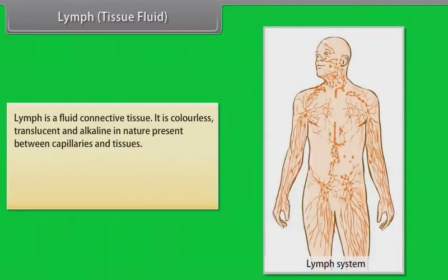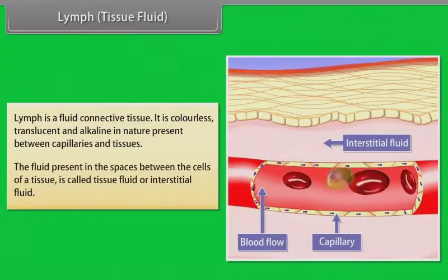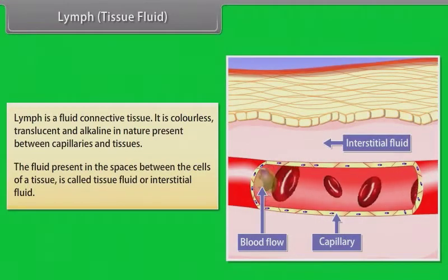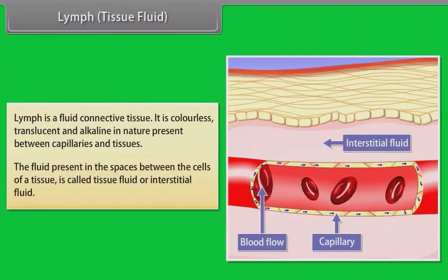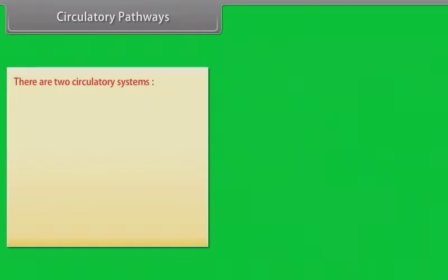Lymph is a fluid connective tissue — colorless, translucent, and alkaline in nature — present between capillaries and tissues. The fluid present in spaces between cells of a tissue is called tissue fluid or interstitial fluid. There are two circulatory systems: open and closed.